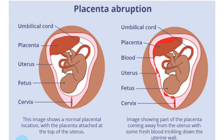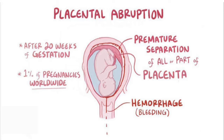Abruptio placenta is the premature separation of the placenta from the uterine wall — from the endometrial lining. Normally the placenta attaches to the endometrium to absorb blood and nutrients for the fetus. Placental abruption means premature separation of this placenta, occurring after 20 weeks of gestation and mostly before 37 weeks.